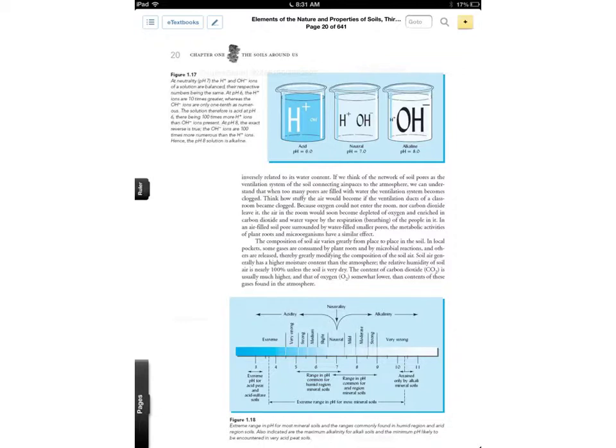In figure 1.17, if we have an acidic solution, we have a lot of hydrogen ions. They're positively charged, and we don't have a lot of OH ions, which are called hydroxyl ions.